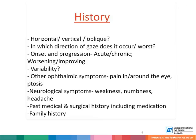Variability is a critical question to ask in patients with diplopia, as many patients with diplopia have underlying myasthenia, and it gives a clue as to fatigability as well. Ask about other ophthalmic problems, pain in or around the eye, and associated drooping of the eyelids. Neurological symptoms are important in terms of weakness, numbness, and headaches, which may point to a more systemic problem. Past medical and surgical history, including medications, and family history must also be obtained.